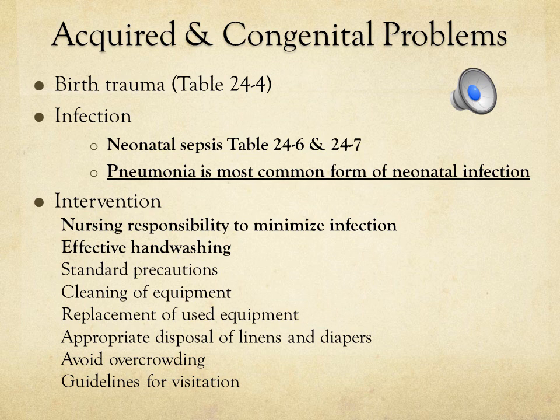To prevent and manage infections, effective handwashing and universal precautions are standard, especially with a compromised immune system. Ensure equipment is clean and functioning appropriately, replace used items, and follow visitation guidelines carefully. You don't want to expose the baby to any additional outside organisms, even from well-meaning family members wanting to visit.